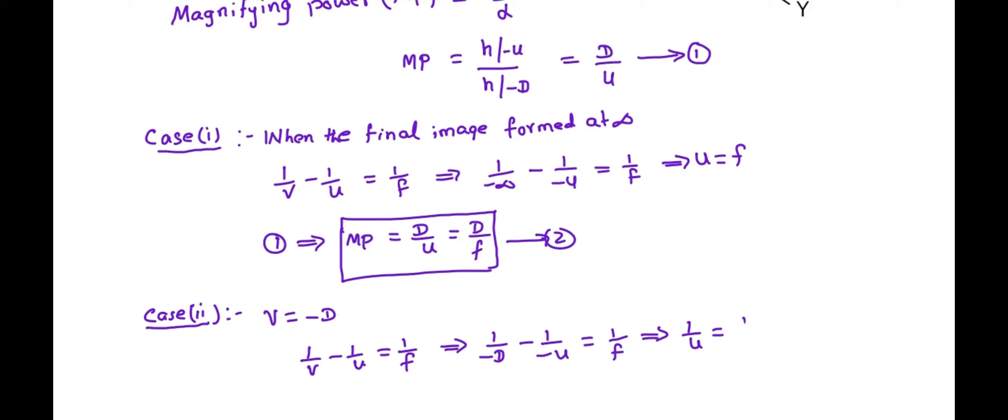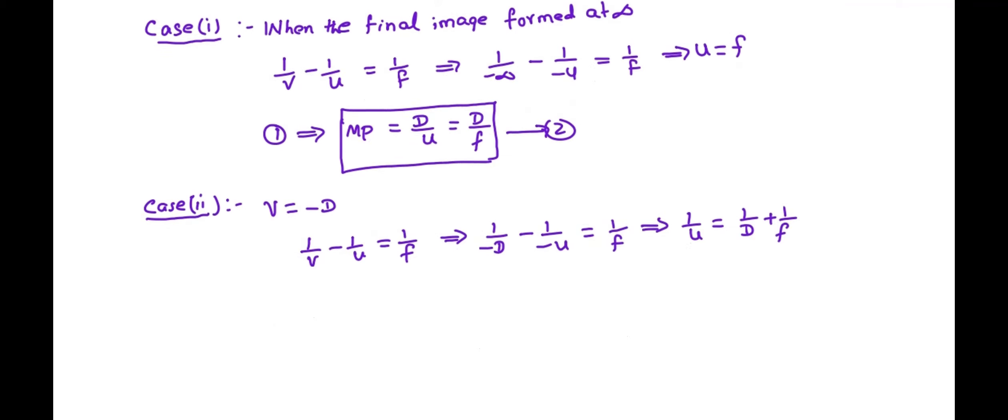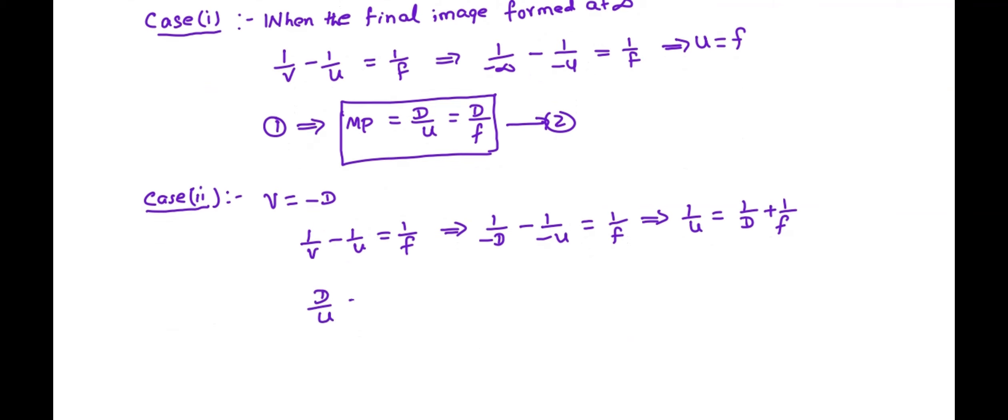From this, we can write 1 by u is equal to 1 by d plus 1 by f. By multiplying both sides with d, we will get d by u is equal to d by d plus d by f. From this, we can use equation number 1. From equation number 1, that is also equal to 1 plus d by f. We have magnifying power is equal to d by u, that is equal to 1 plus d by f. This is another mathematical formula for magnifying power. We can name it equation number 3.